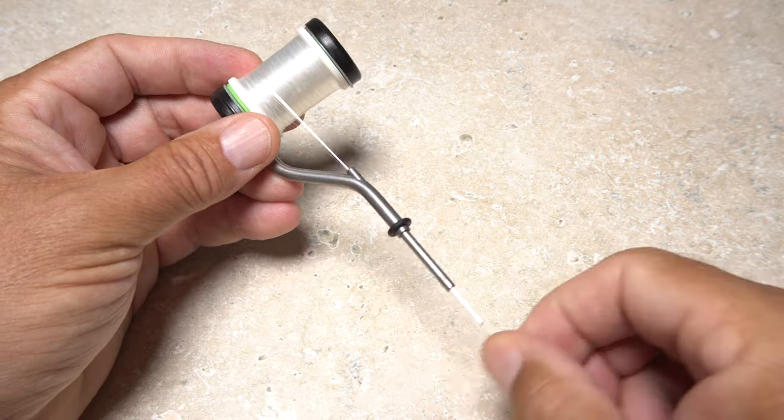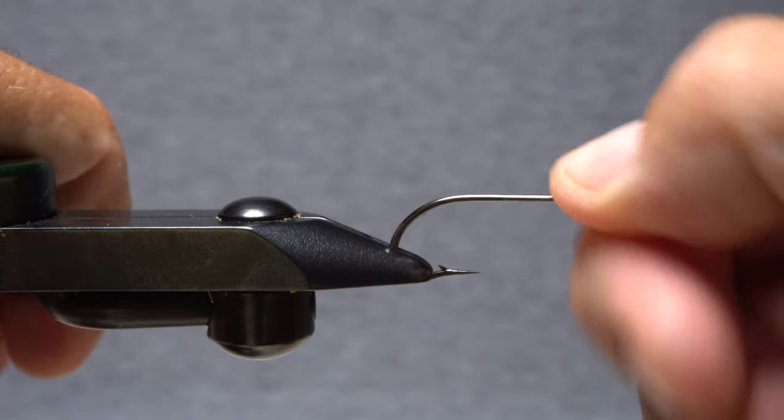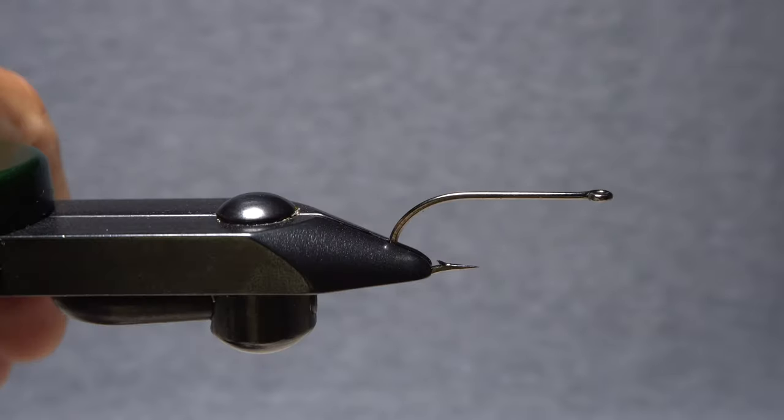Strong thread allows you to tie with a great deal of thread tension. This means it's imperative that you have a vise that holds a hook absolutely secure.